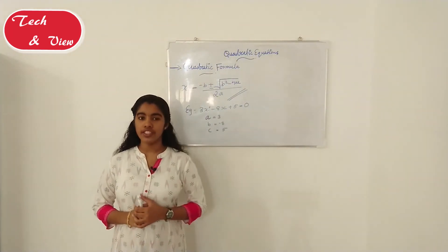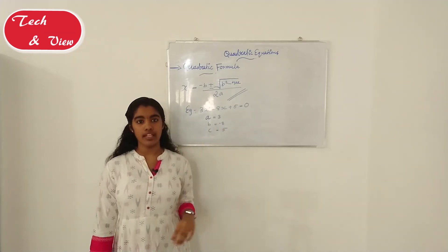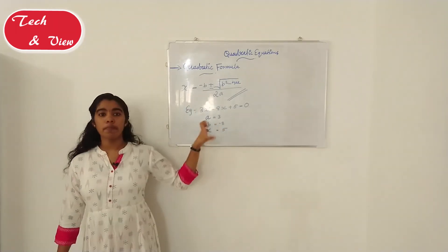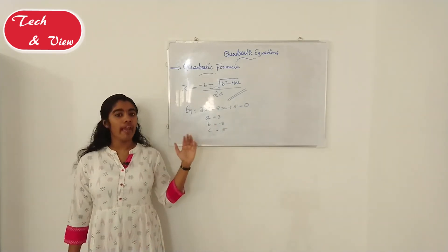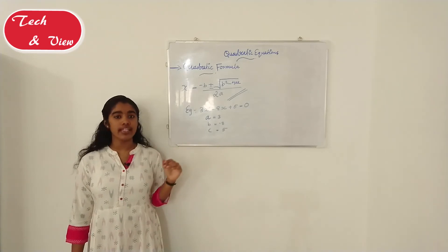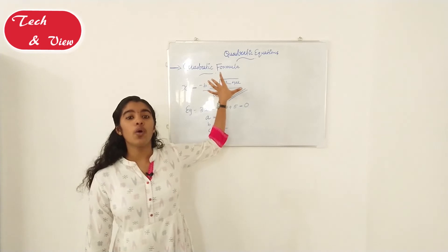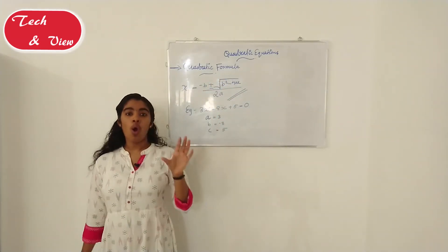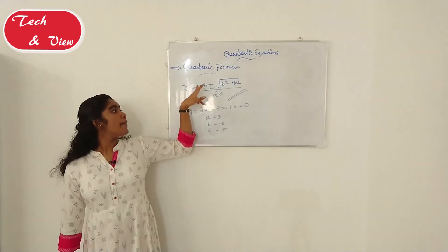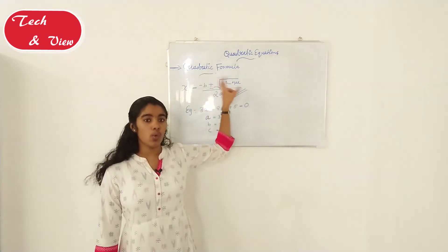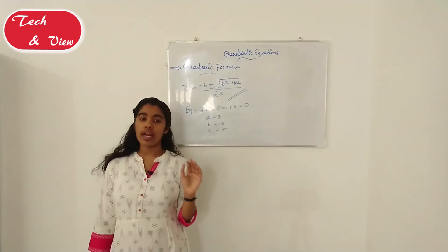So we have to take the quadratic equation and solve it in two ways. We can use the middle term split method or the quadratic formula. The quadratic formula is x is equal to minus b plus or minus root of b squared minus 4ac, all divided by 2a. This is the quadratic formula.